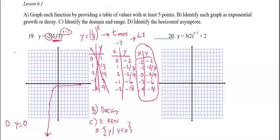Alright, so that takes care of number 19. Now let's run through number 20. Start with your parent table. In this case, it'll be 2 to the x power. Same inputs. 0, 1. 1 would give you 2. 2 squared is 4. 2 to the negative 1 is 1/2. 2 to the negative 2 is 1/4.